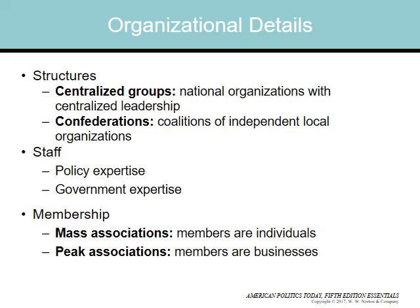Interest group staff typically have expertise in the policy area or else have experience in Congress — connections and understanding of how government works. This need for connections has led to the revolving door, where people move back and forth between government and lobbying. In mass associations, members are individuals; in peak associations, members are businesses.